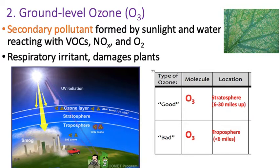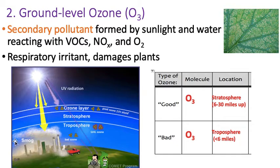The next pollutant we're going to talk about is ground-level ozone. There are two types of ozone: there's ozone in your stratosphere, which is the good ozone — that's the one we hear about when we talk about blocking out UV radiation. And then there's bad ozone in your troposphere, closer to the Earth's surface, which causes smog. Both are the same molecule, O3, but ground-level ozone is a secondary pollutant formed by sunlight and water reacting with VOCs, NOx, and oxygen. It can cause respiratory irritation and damages plants near the surface.